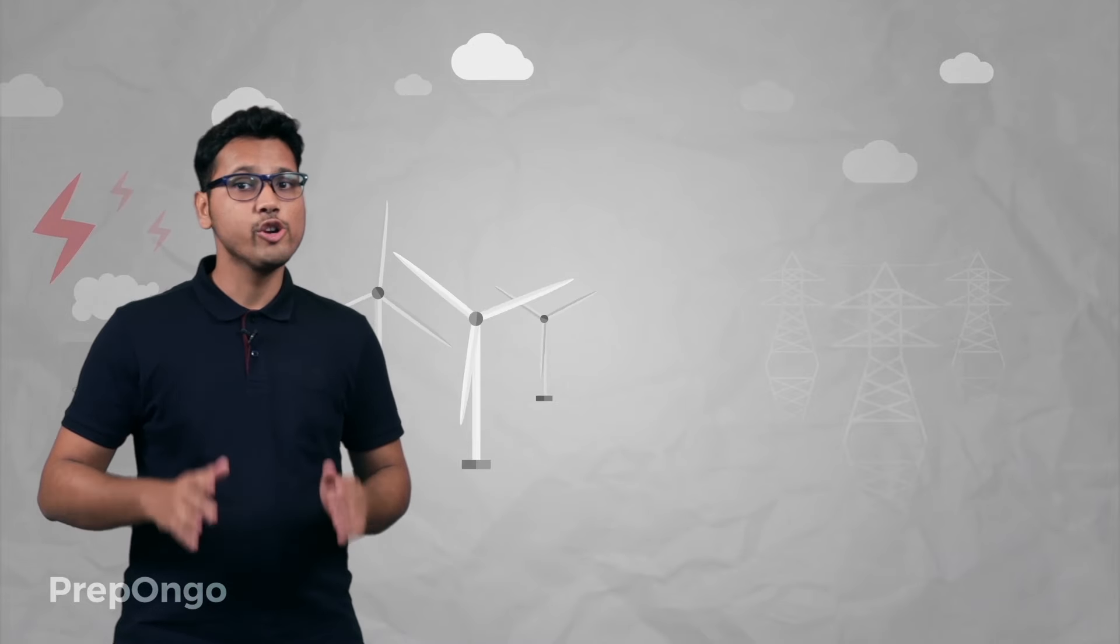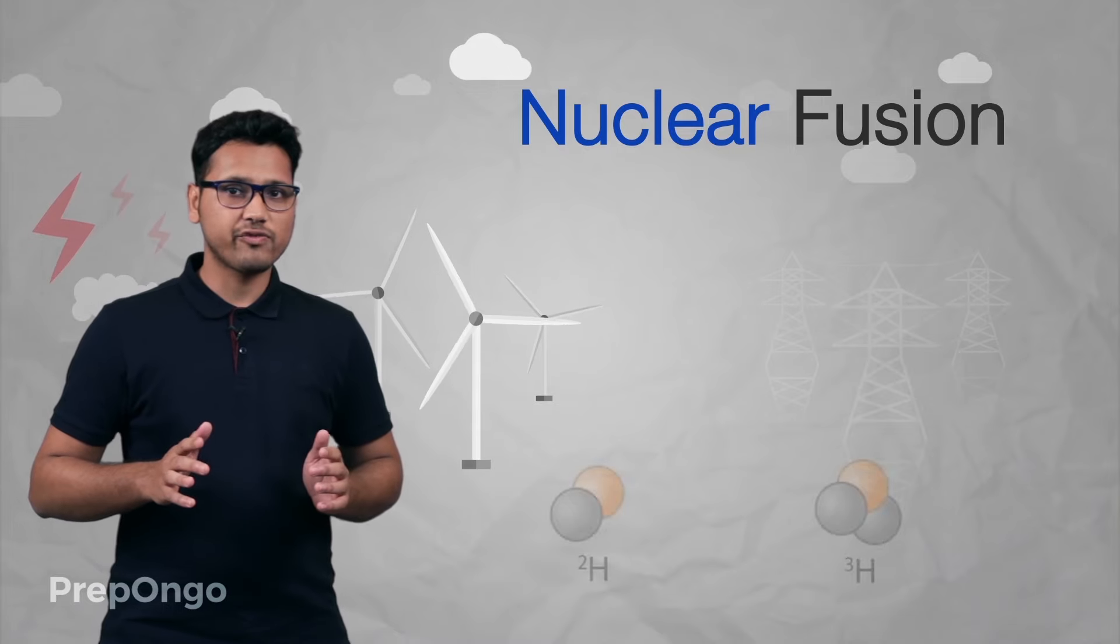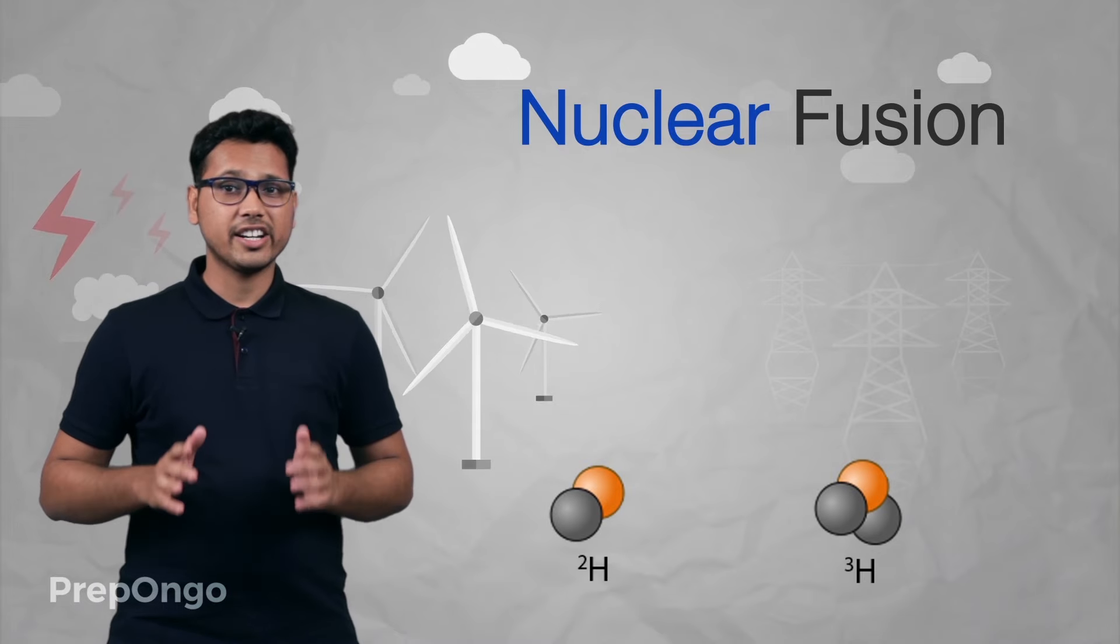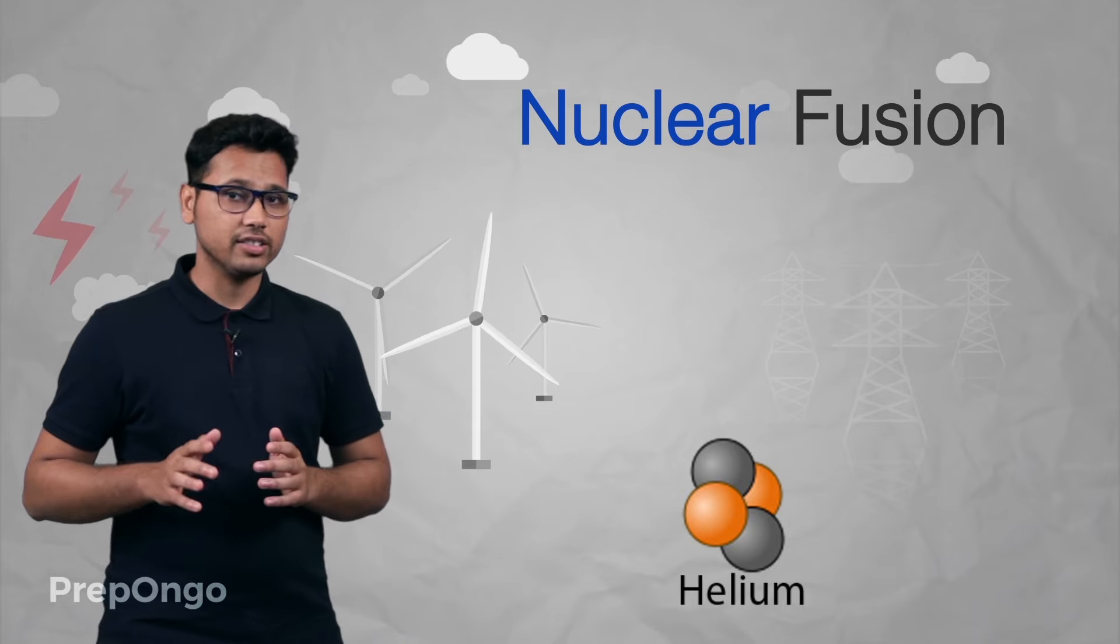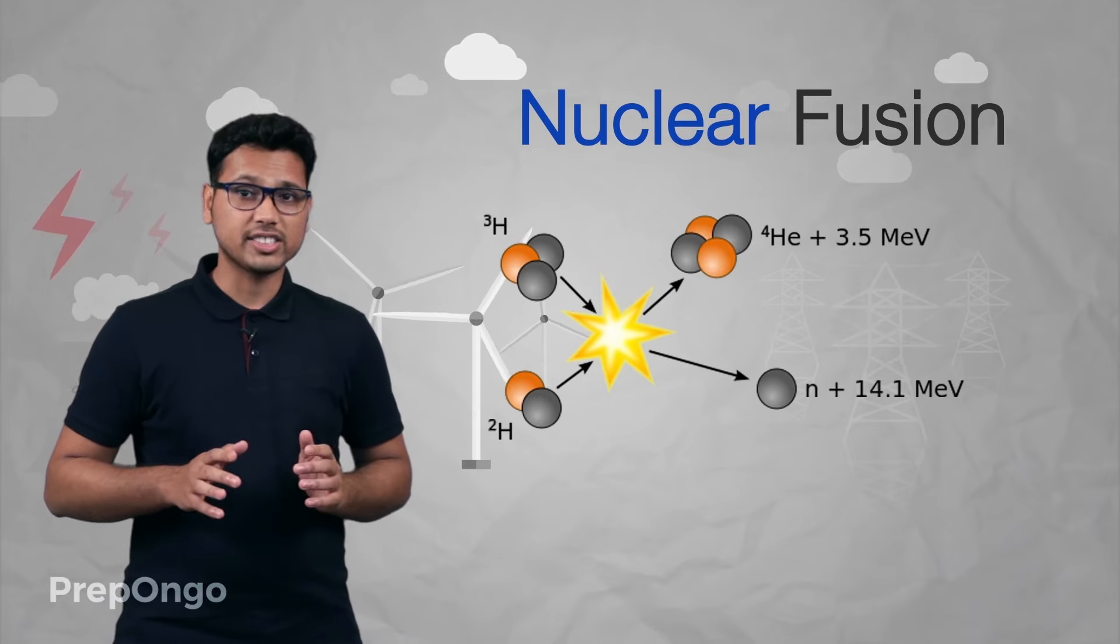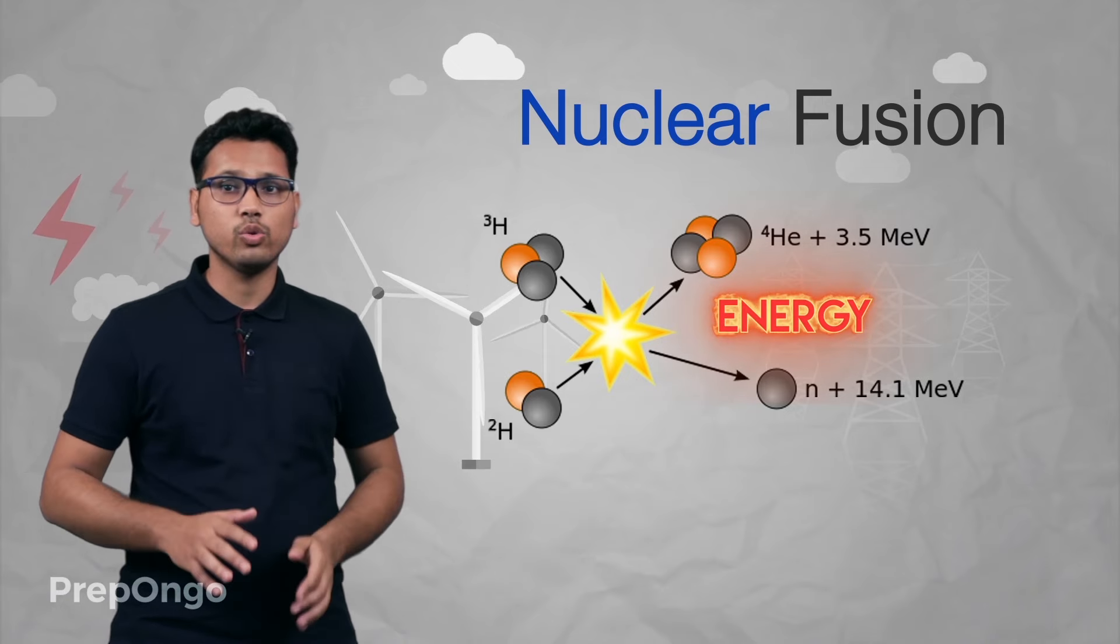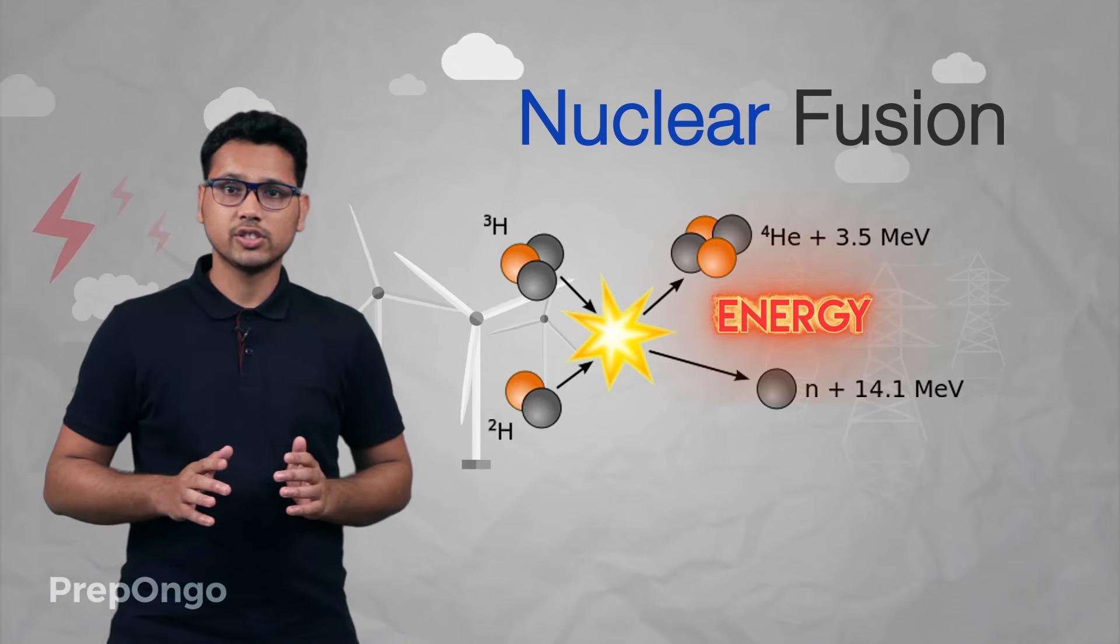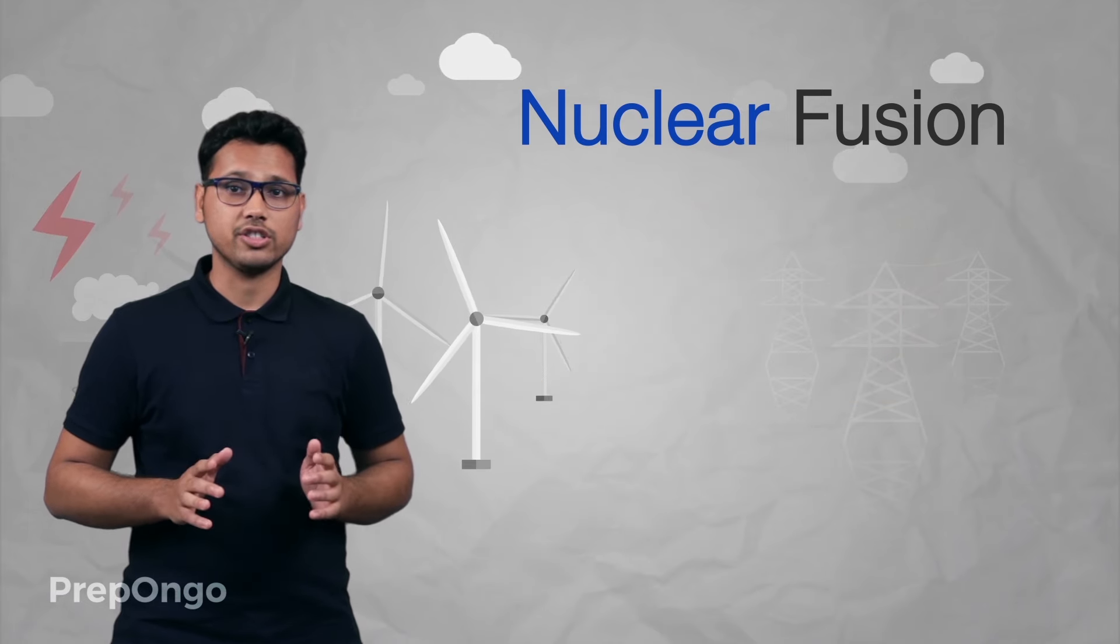Let's talk about nuclear fusion now. This is the process which involves fusion of two lighter nuclei like hydrogen into a heavier nucleus like helium. Now in this process also a small mass is lost and that mass is converted into huge amount of energy. So we can say that in the process of fusion also we get a huge amount of energy.